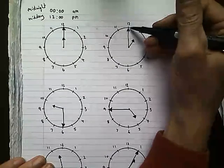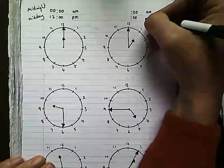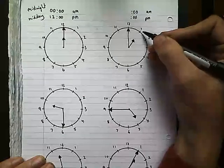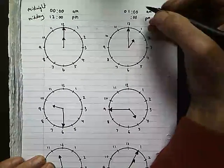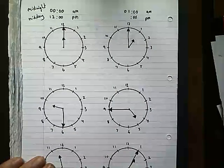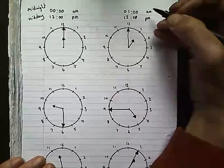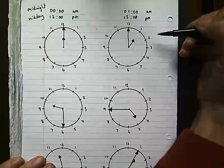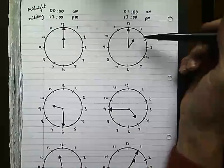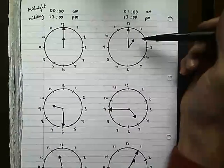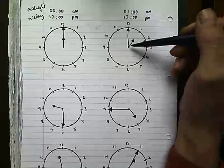Second clock: the minute hand is at twelve again, so there are zero minutes. The little hand tells me it's at one, so that's one a.m. - written as 01:00. Or it's one p.m., so I add on 12 hours: 12 plus 1 is 13, giving 13:00. If I saw this clock and didn't know whether it was morning or evening, I'd first look at the minutes hand then go to the hours hand.